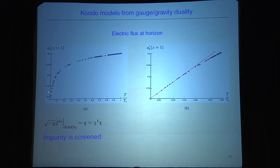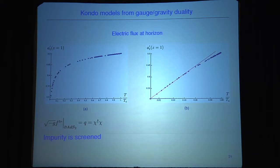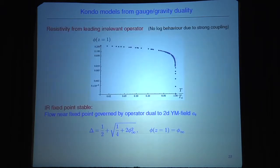The screening does not go all the way to zero — A' of r at the horizon goes to a finite value — which means we have a form of under-screening. However, it is different from under-screening in the normal Kondo effect because our electron gas is already strongly coupled.